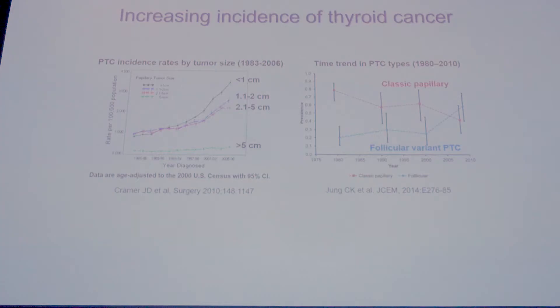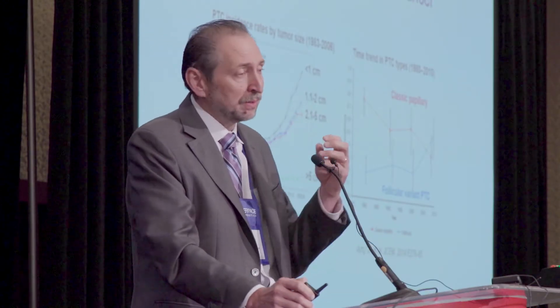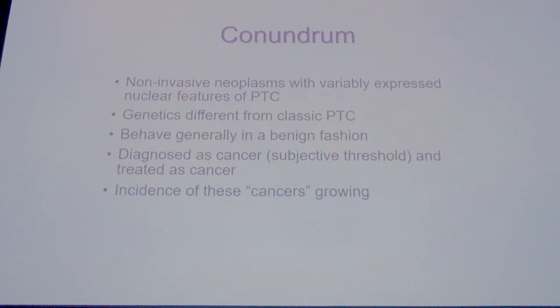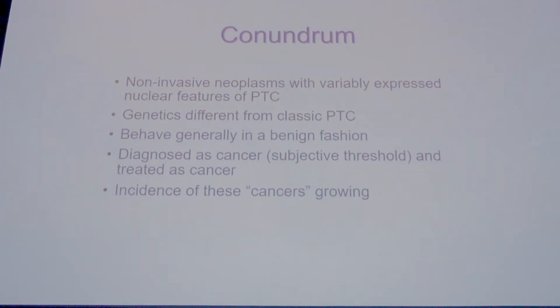During this transition over the last 15 years, we started to diagnose more and more follicular variant PTCs than classic papillary carcinomas, telling us something about the changing way we were diagnosing these cancers. By early 2013-2014 we were in a situation with a class of non-invasive neoplasms with variably expressed nuclear features of papillary carcinoma, genetics different from classical papillary carcinoma, that behaved generally in a benign fashion — but we were still diagnosing and treating them as cancer.